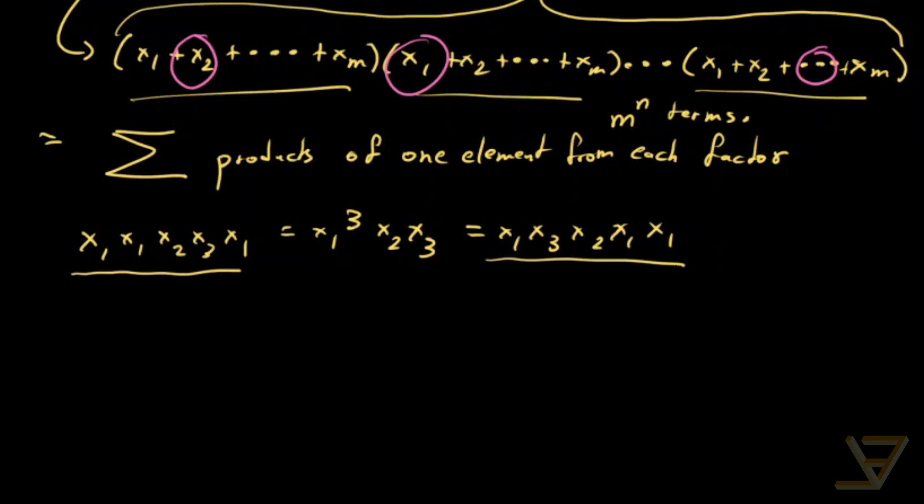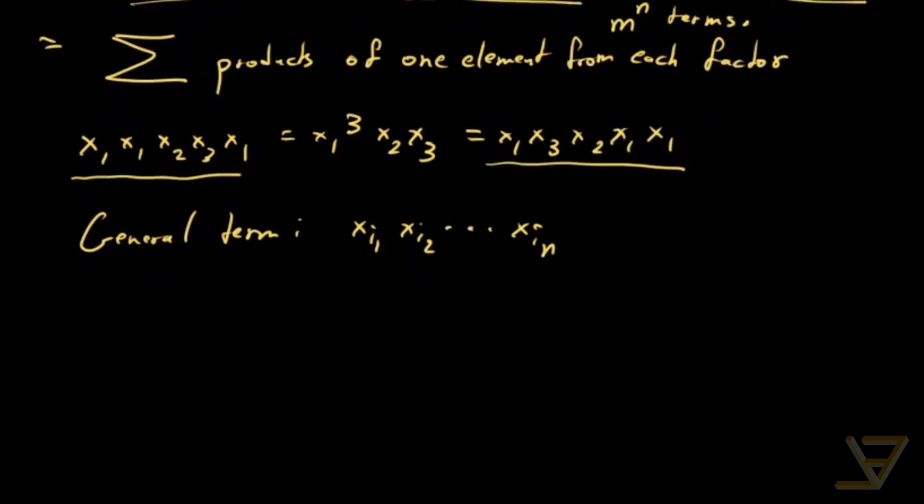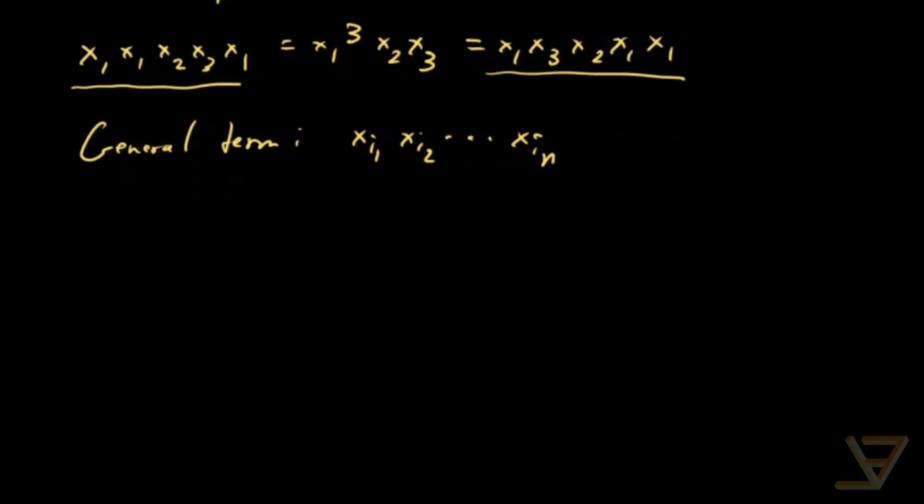Here's what we're going to do. We're going to say a general term looks like this: x i1, x i2, all the way through to x in. Actually, it should be x in because there are n terms and factors from which we can choose one term from each. And each of these, the ij, the indices, they lie in the set 1, 2, through m, which can concisely be written as the section m of the mth initial segment of the positive integers.